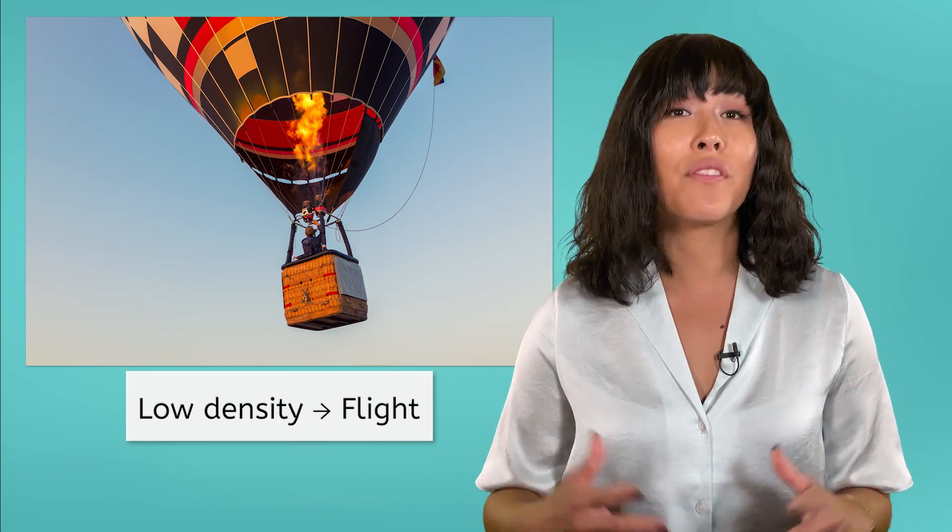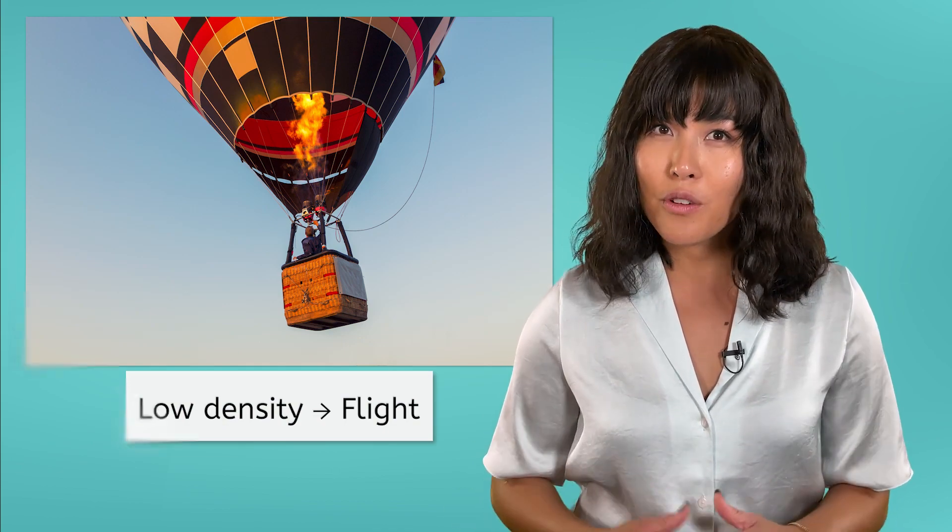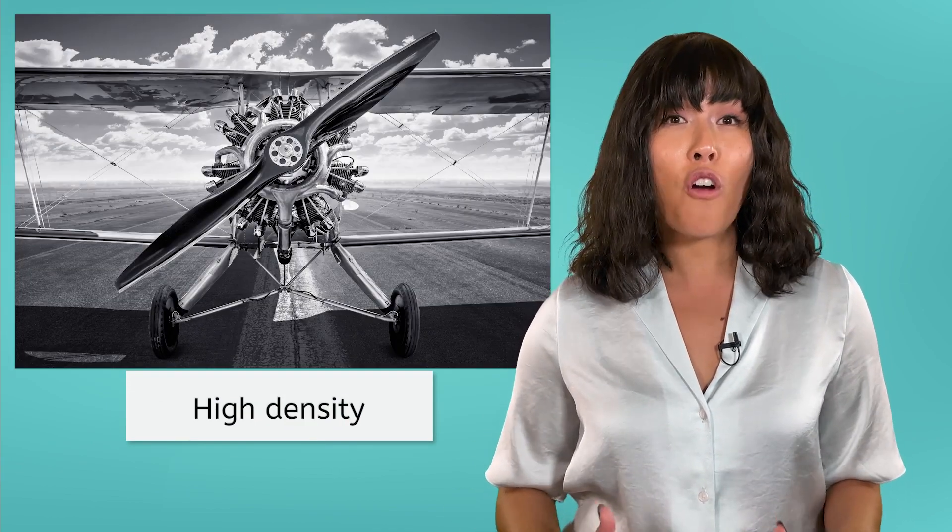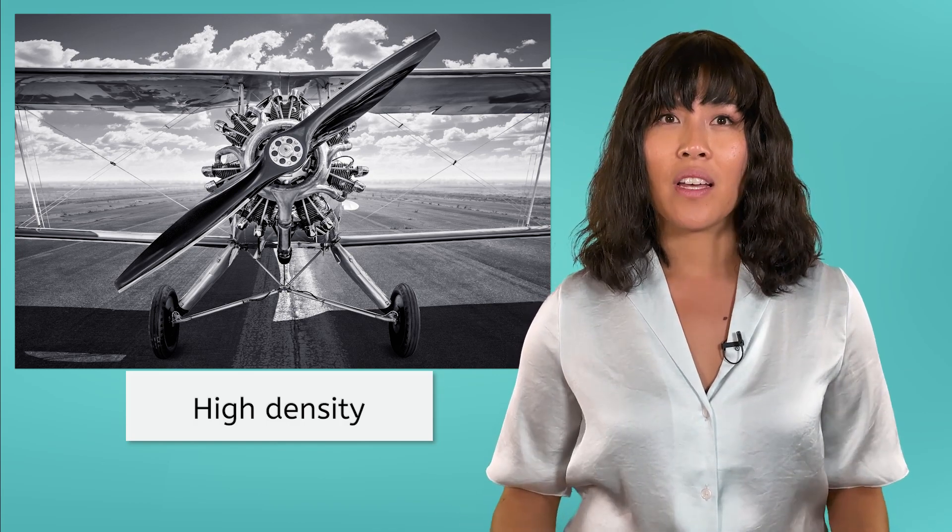Hot air balloons have the advantage of low density to achieve flight. But even the first airplanes were made of materials far more dense than air. How is it possible that a metal contraption weighing thousands of pounds can lift off the ground and remain in the air?